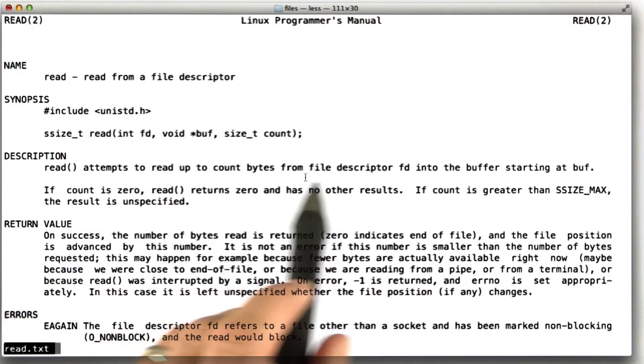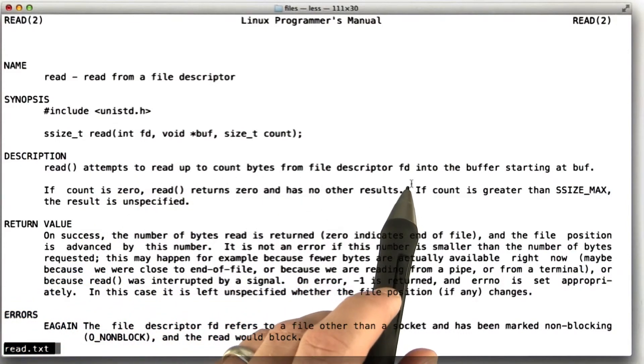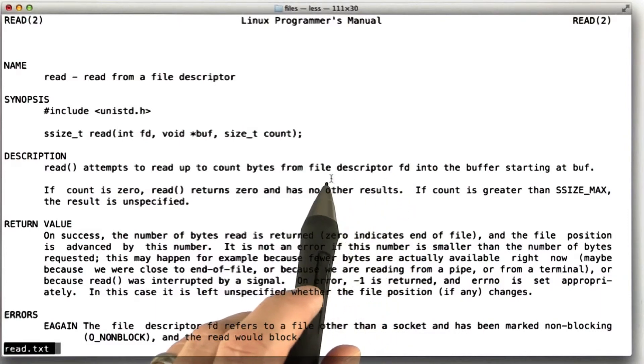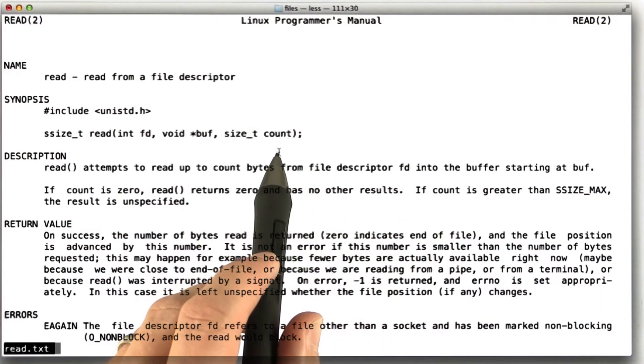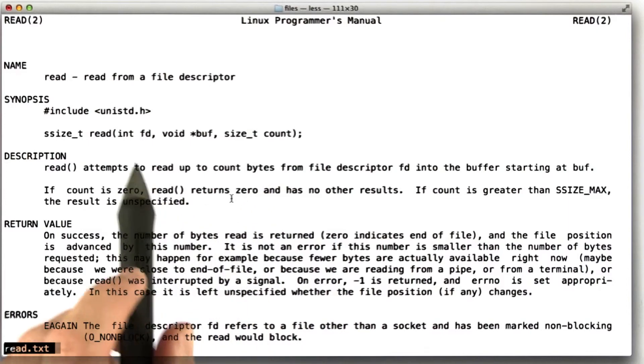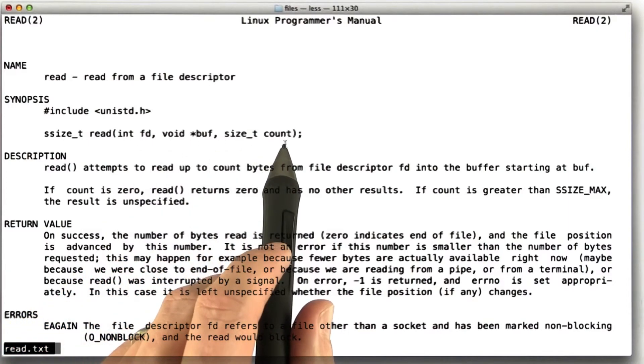What we can see here is that read returns the number of bytes read from the file. But there's an interesting fact here that read is allowed to read less bytes than you actually asked for. So it's going to return some number between 0 and count, but we don't know what number it's going to return.